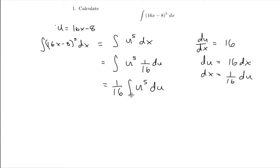Now I'm in a situation where I have an indefinite integral of a function of u, and I need to integrate it with respect to u. So I can actually carry out this anti-differentiation. Using my anti-derivative laws, what I end up with is 1 over 16 times 1 sixth u to the power of 6 plus a constant.